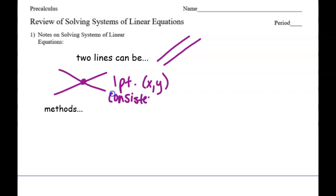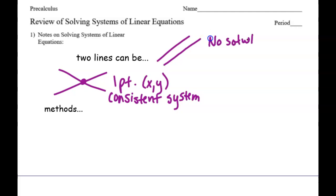You are not going to have to know this vocabulary, but I will tell you. If you have parallel lines, they will never intersect, so you would say no solution. And that is called an inconsistent system.